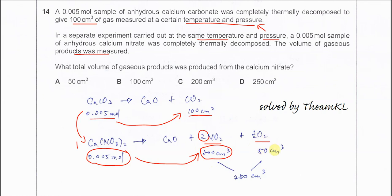For O₂ we use the same method. It should be 50 cm³ because it's 1 to 0.5. So we just sum up these two and get 250 cm³. The answer is D. That's all, thank you.